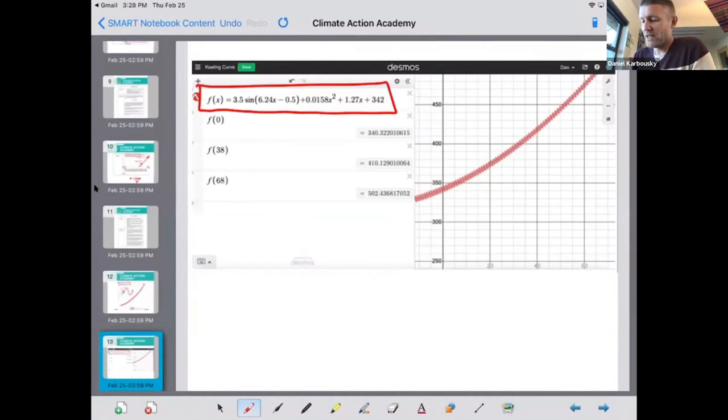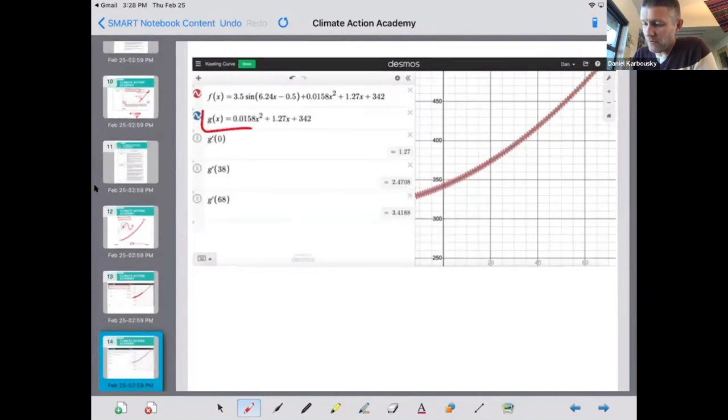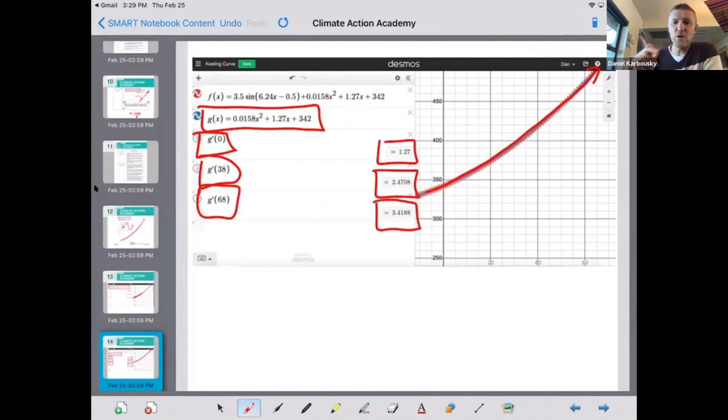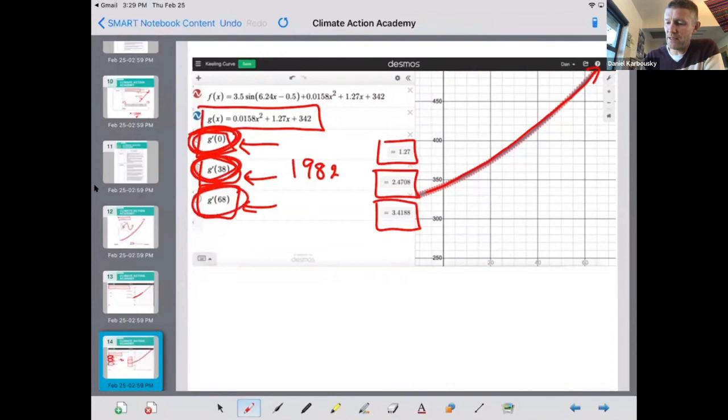And what you can do with this though, is you could simplify this equation. This one takes into account all the little variations going up and down, but if you want to simplify it, this is just the quadratic piece right here. And it just talks about it going up and up and up. And if you do that, then you can take the derivative of this function at certain points in time and find the instantaneous rate of change or basically how fast it's going up at any moment in time where these are years after a certain time period, which I think was like 1982. So this would be 1982 right here. This would be in 2020 and this would be in 2050. And these tell you how fast the carbon dioxide is going up by taking the derivative of this function.